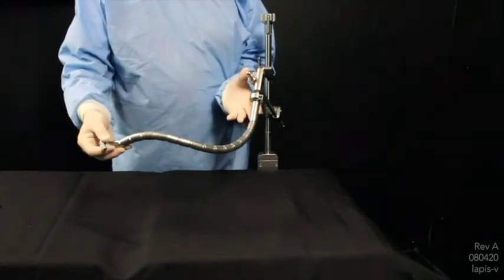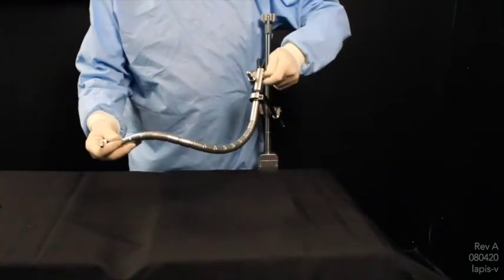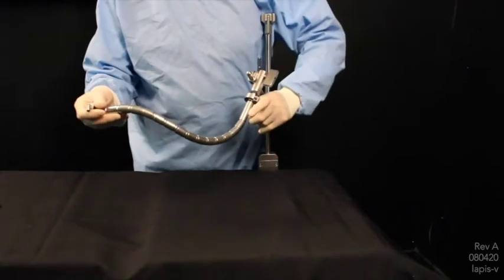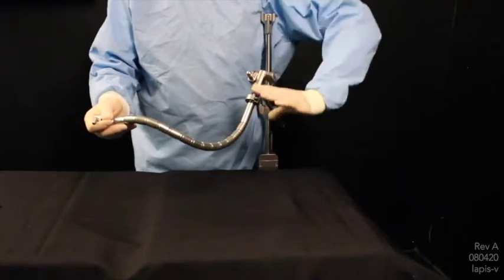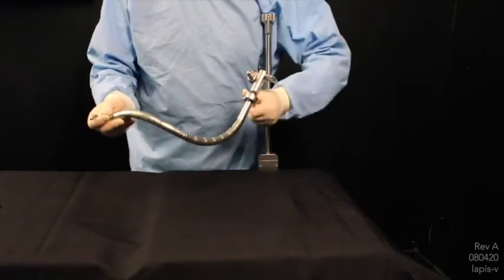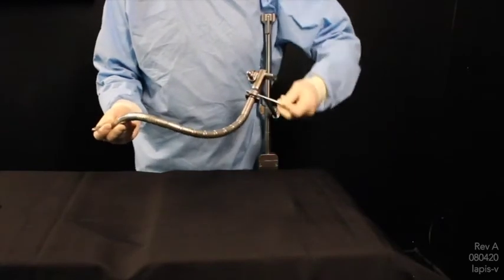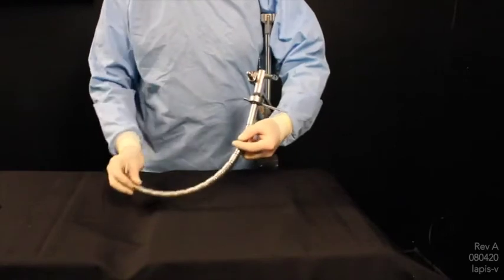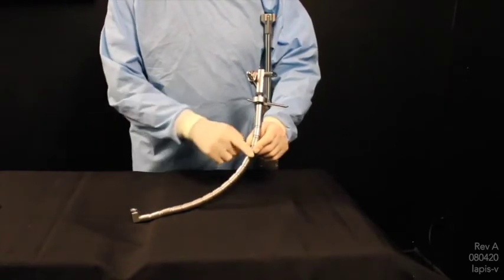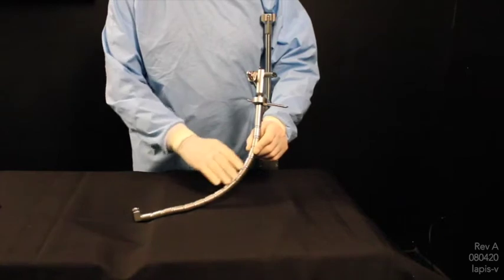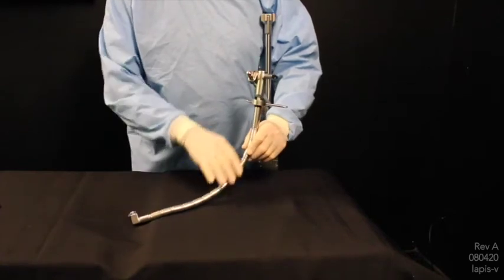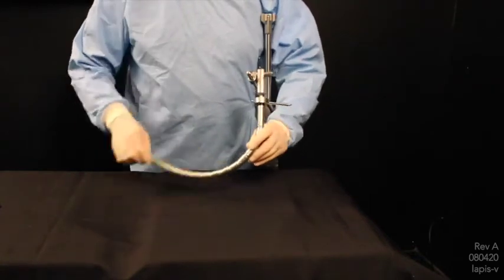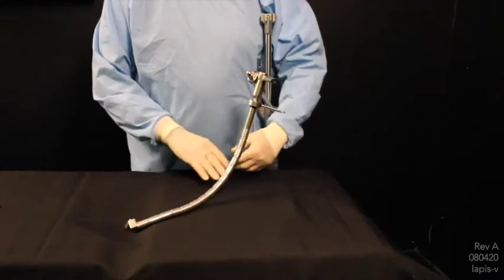Once a case is complete, always make sure to loosen the arm before sterilization. The arm must be completely flexible before sterilization. If not, this tends to wear out the coils that are within this arm itself. So always be sure that there is a complete flex before sending into sterilization.